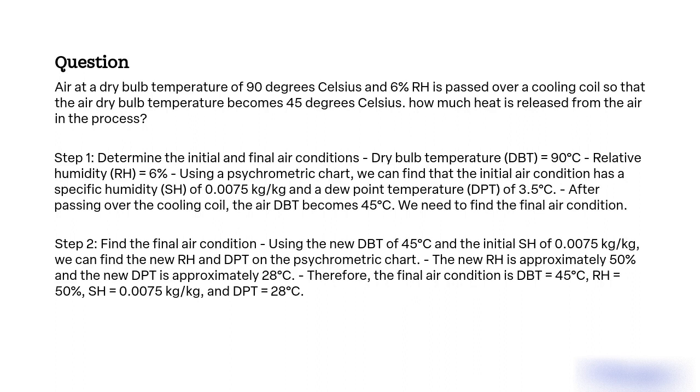Step 2: Find the final air condition using the new DBT of 45°C and the initial SH of 0.0075 kg/kg. We can find the new RH and DPT on the psychrometric chart. The new RH is approximately 50% and the new DPT is approximately 28°C. Therefore, the final air condition is DBT = 45°C, RH = 50%, SH = 0.0075 kg/kg, and DPT = 28°C.